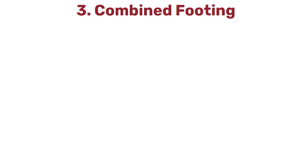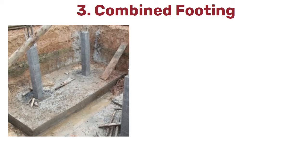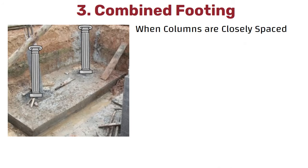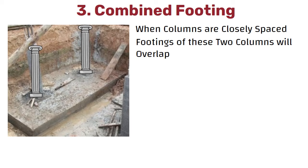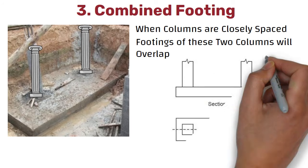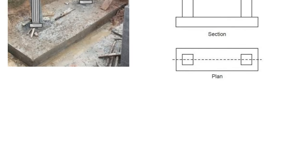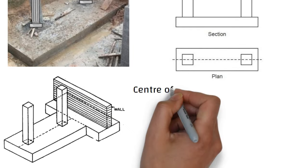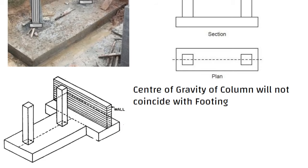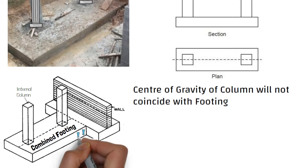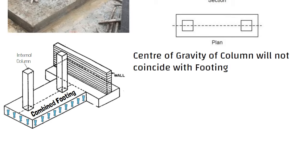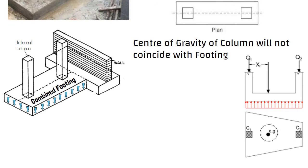Third, combined footings. A footing that supports two or more columns is known as combined footing. When columns are closely spaced and if we try to construct individual footings, the footings of these two columns will overlap. So in this case, it is better to provide combined footings than isolated footings. When one column is close to a property line or sewer pipe, the center of gravity of the column will not coincide with the footing. In such cases, it is necessary to provide combined footings with the adjacent internal column. The ultimate aim is to get uniform pressure distribution under the entire area of footings, so the center of gravity of the footing area should coincide with the center of gravity of total loads of two or more columns.